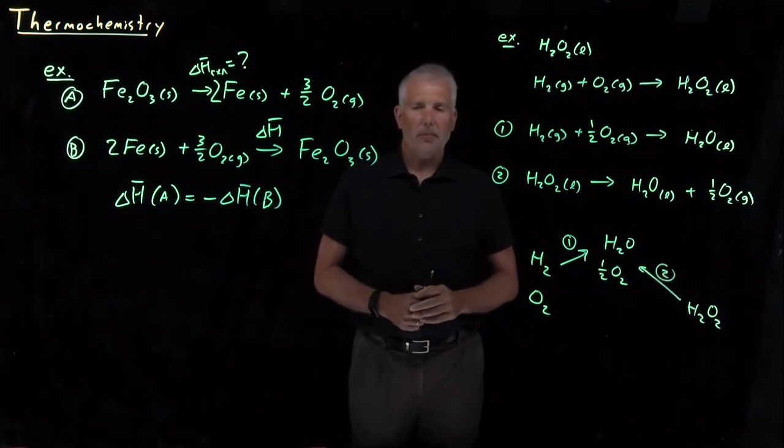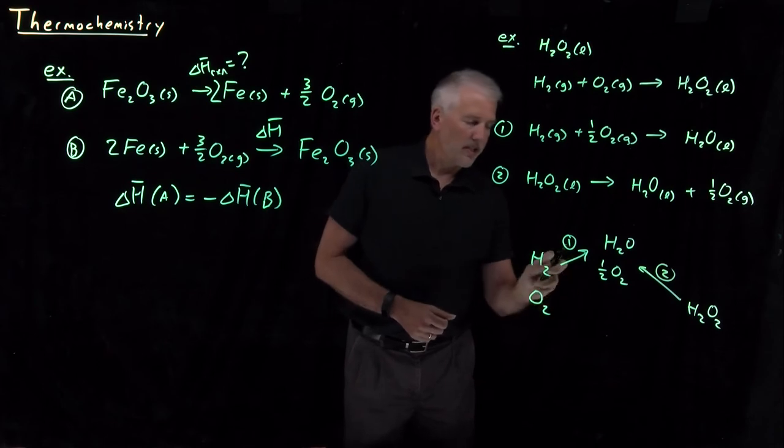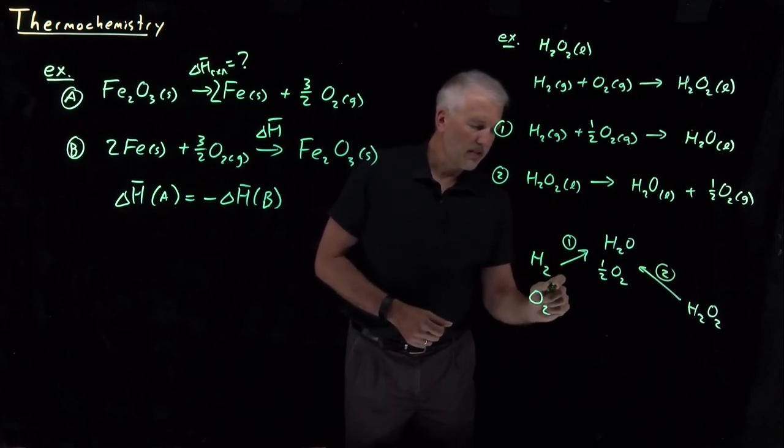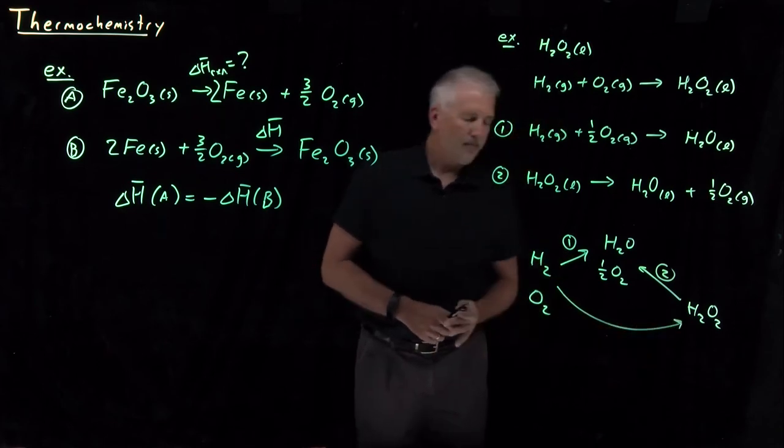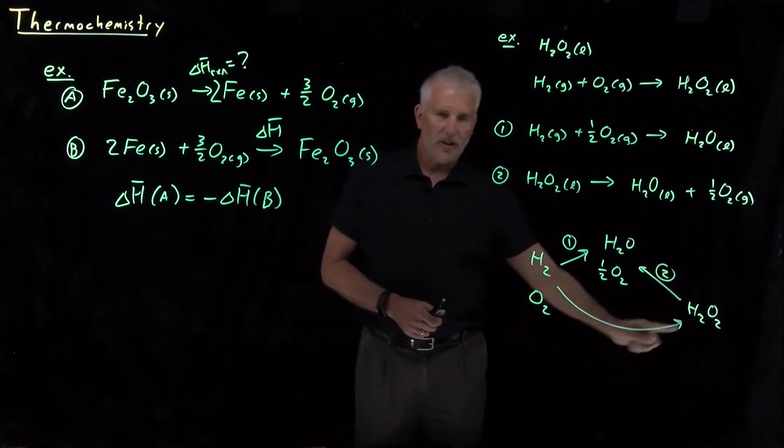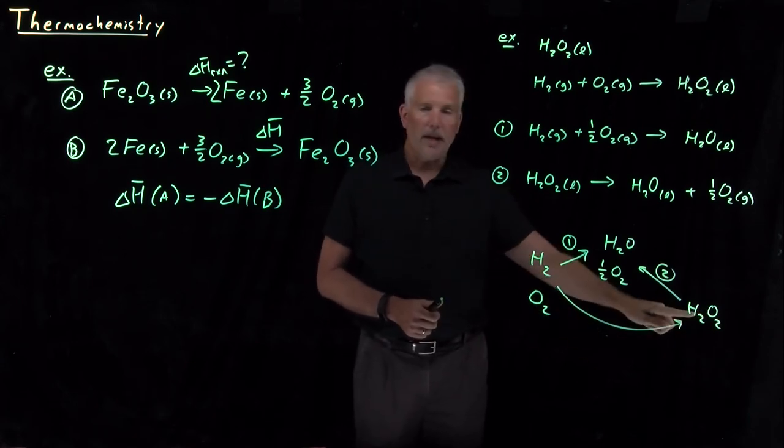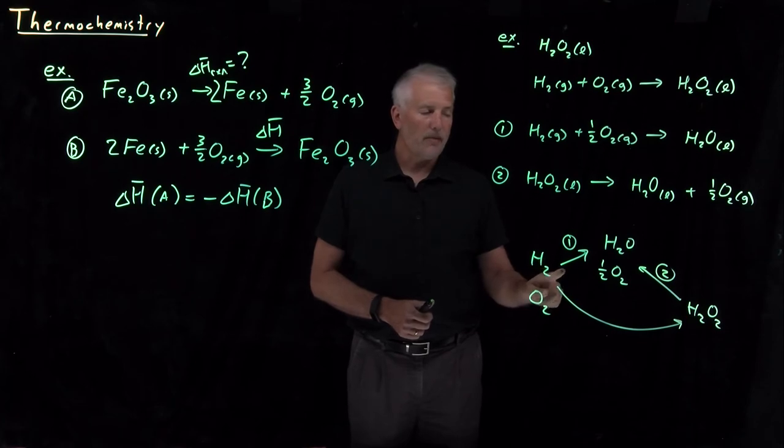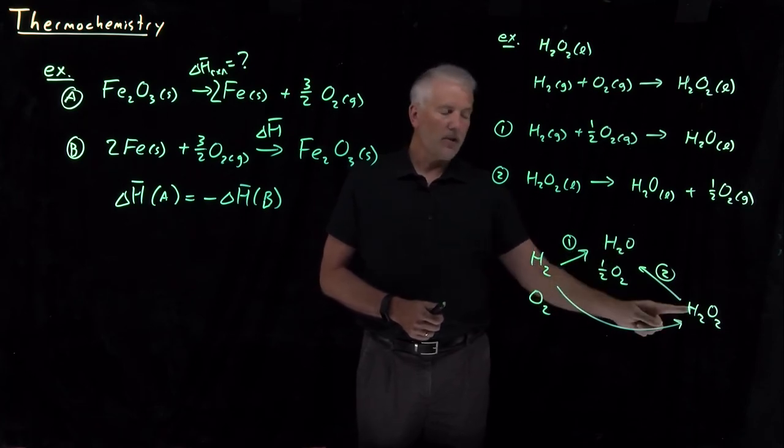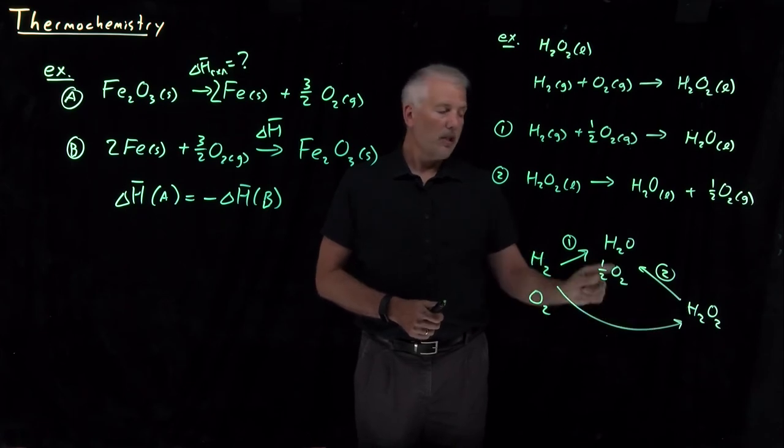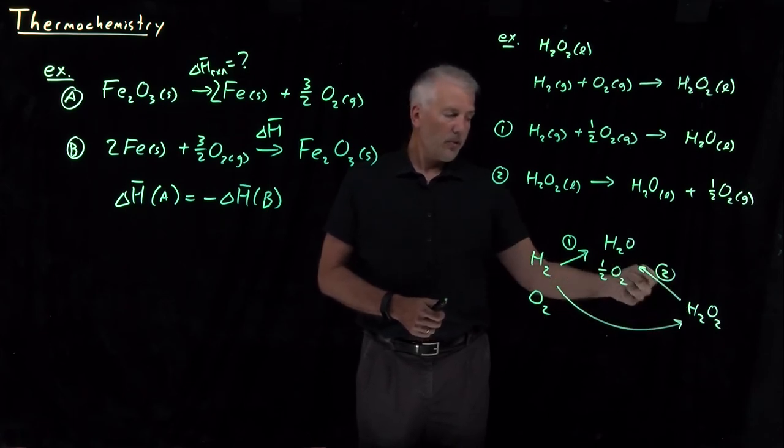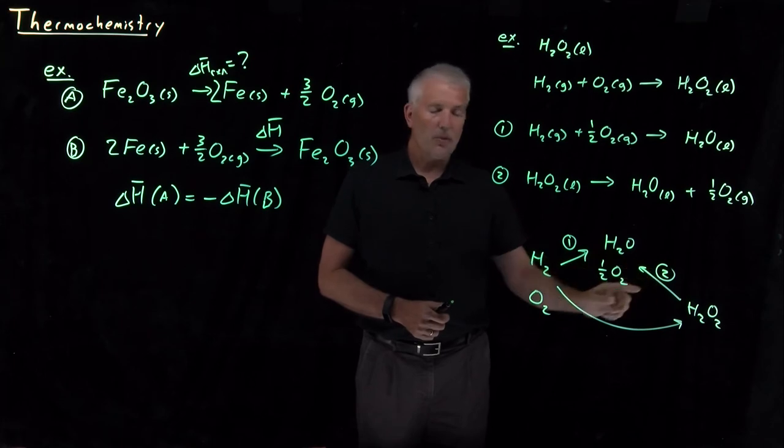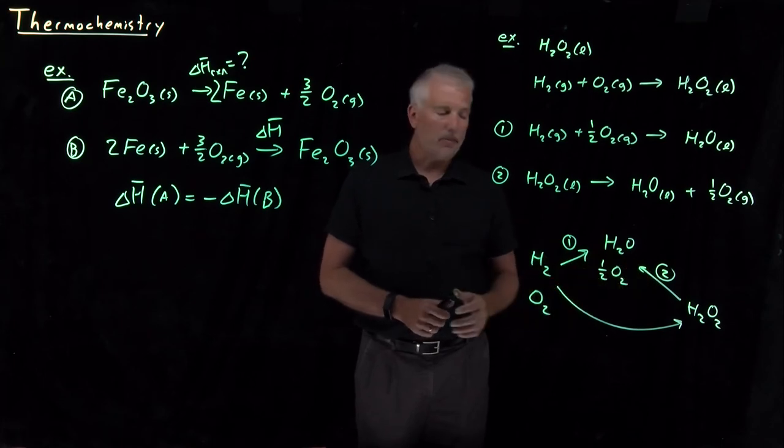Remembering that enthalpy is a state function, the delta H for this process, converting H2 and O2 directly into H2O2, it doesn't matter whether we take the direct path or whether we take the indirect path of first converting it to H2O and a half an oxygen, and then converting it further to H2O2, which is the reverse of reaction two. It doesn't matter which of these two paths I take, they're both going to have the same enthalpy.